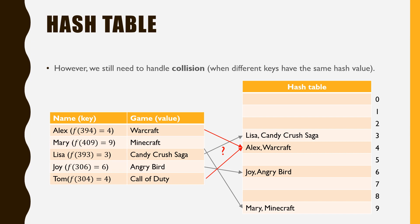From the above example, you may notice that some different keys may correspond to the same hash value. For example, both Alex and Tom correspond to the hash value of 4. Consider if the data we have contains Tom and his favorite game — in this case, Alex and Tom's records would compete for the same location in the hash table. We call this scenario a collision, which is frequent when handling larger sets. Much effort in hash table development is spent on avoiding or handling collisions, and we will discuss these ideas in the upcoming videos for this module.